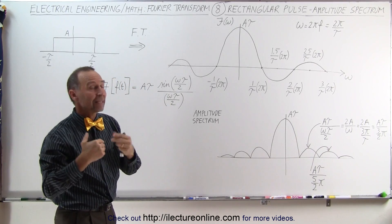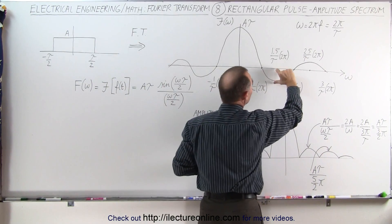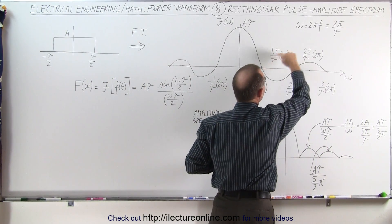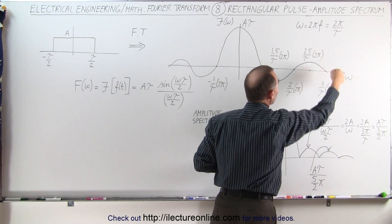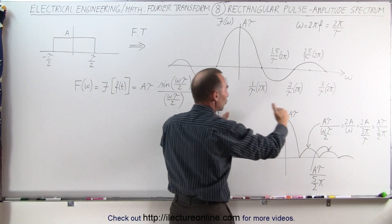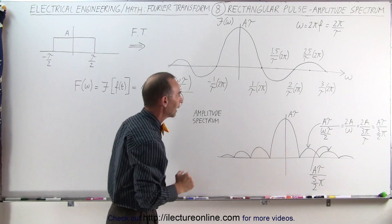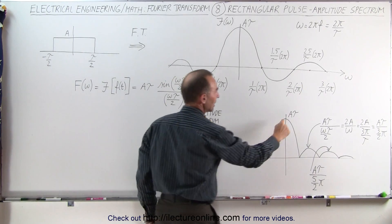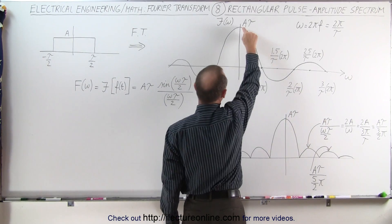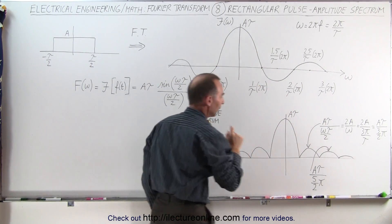If you want the amplitude spectrum, you simply take every negative portion of the function and flip it over to make it positive. That would be the amplitude spectrum of what we see here. The amplitude of the middle is A times tau, just as before.